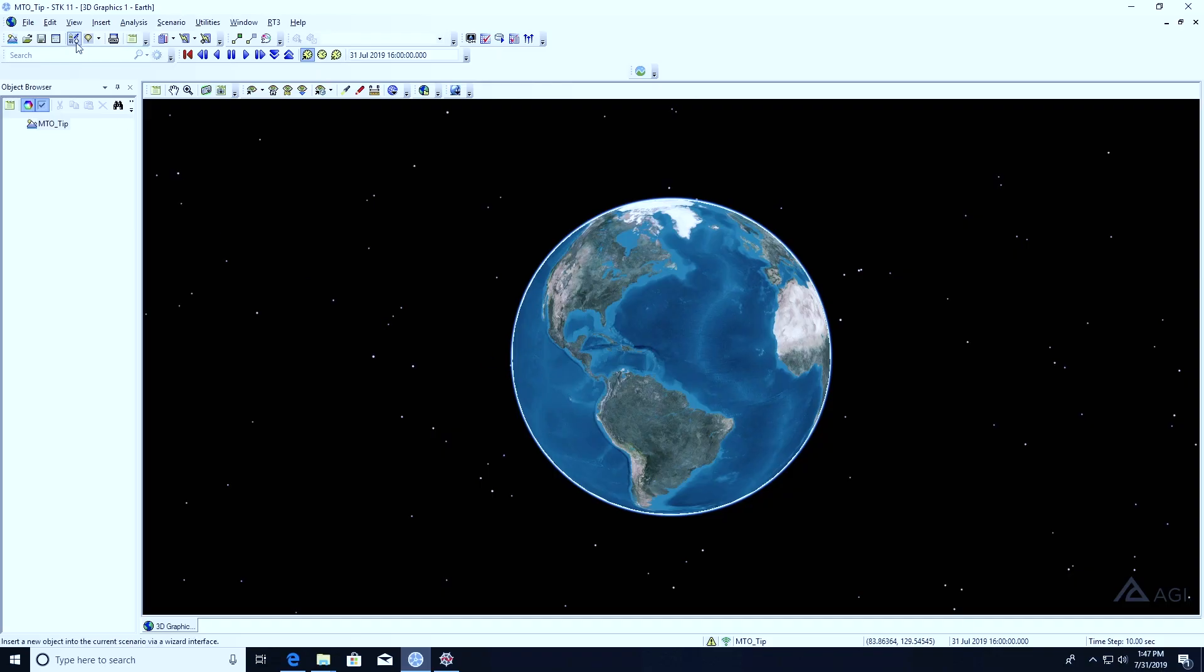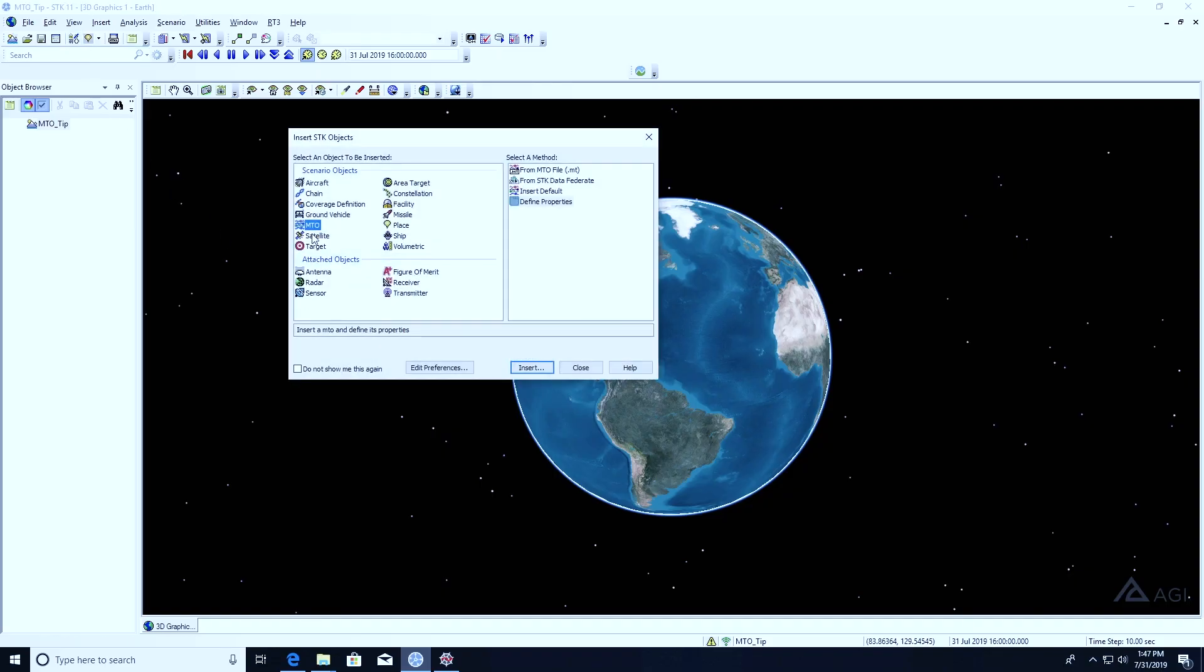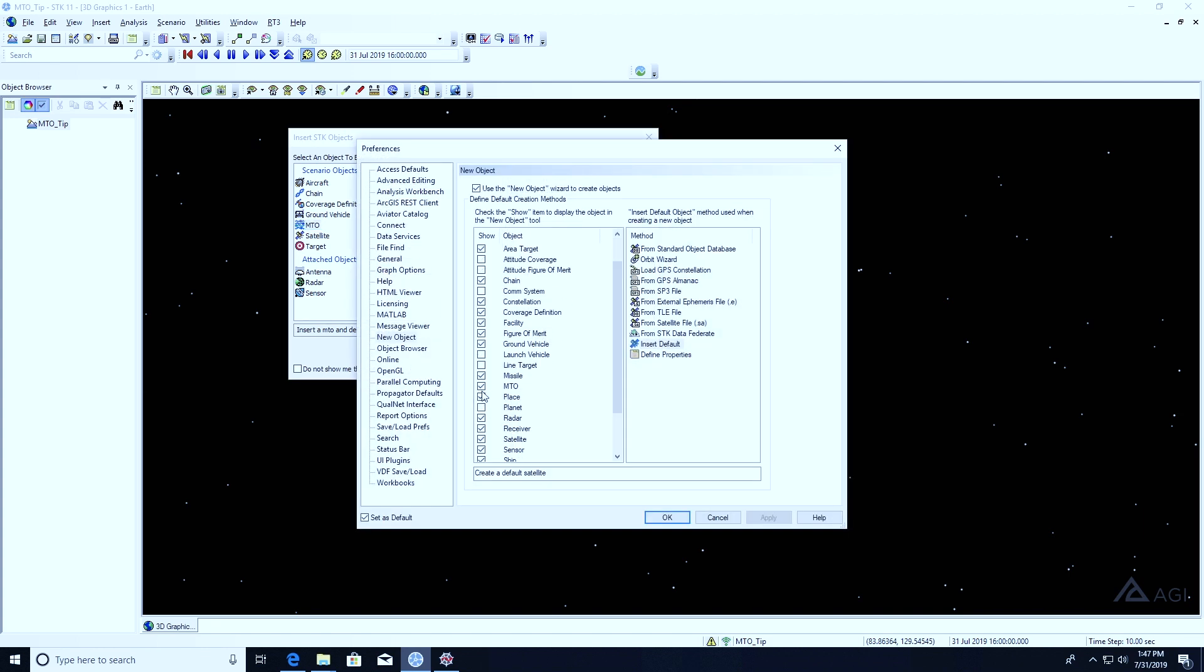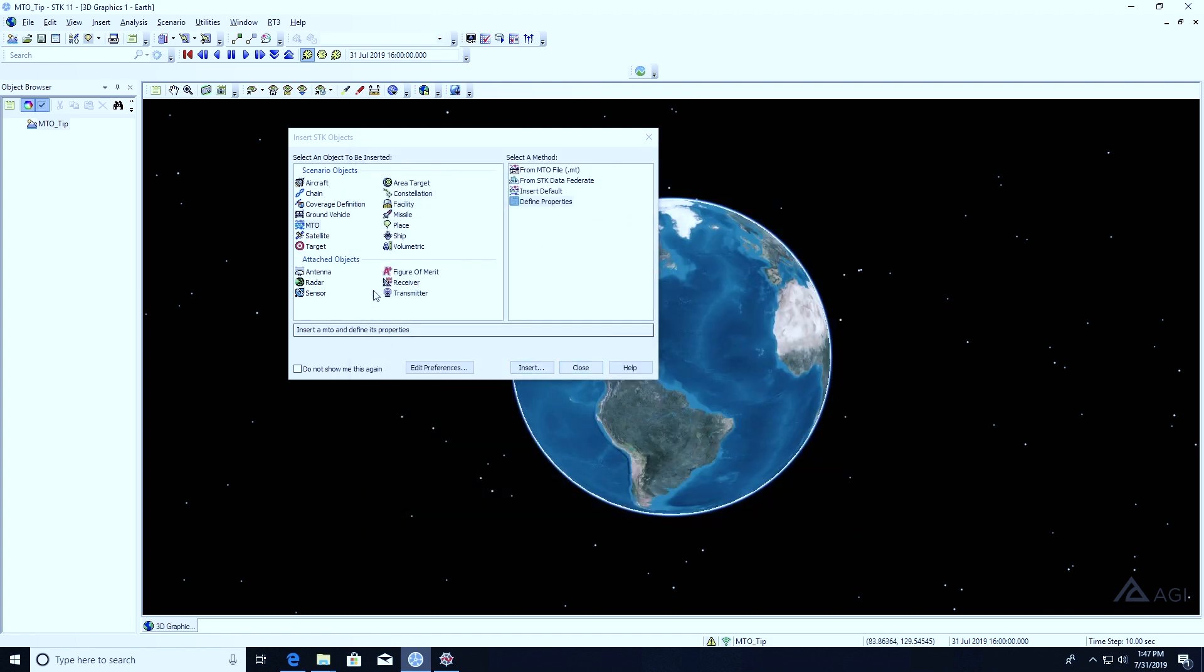To get started, I've got SDK opened up here, and we're going to insert a blank MTO object. So insert objects, scenario objects. If you don't see MTO popping up here in this window, you can go ahead and hit Edit Preferences, and make sure that MTO over here on the left-hand box is checked. Then click Apply or OK. Then we're going to insert a default multi-track object.